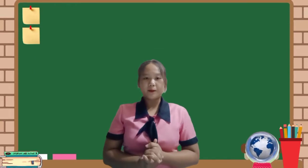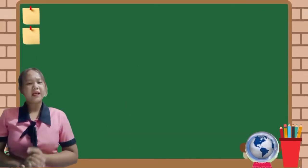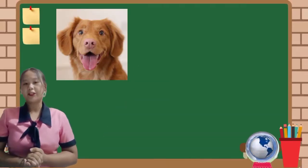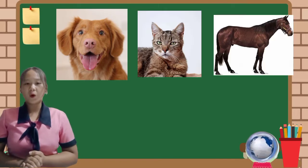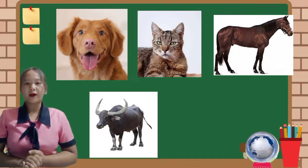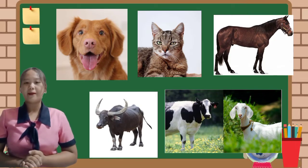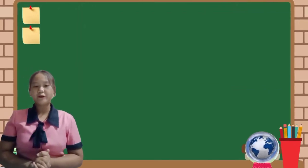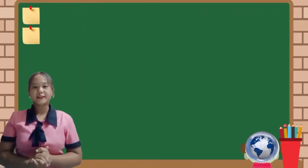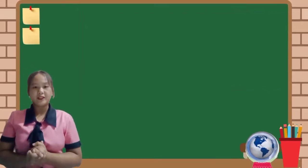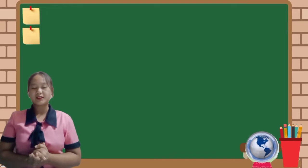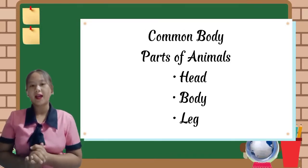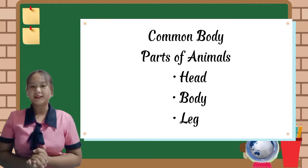Some examples of animals are dog, cat, horse, carabao, cow, goat, and many more. Animals have different body parts and those body parts have different functions. The common body parts of animals are head, body, and legs.